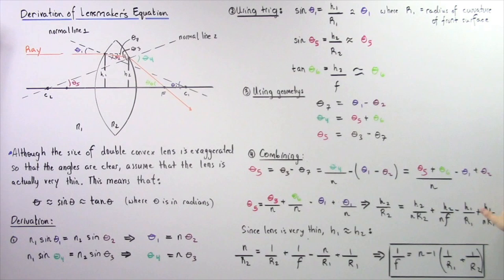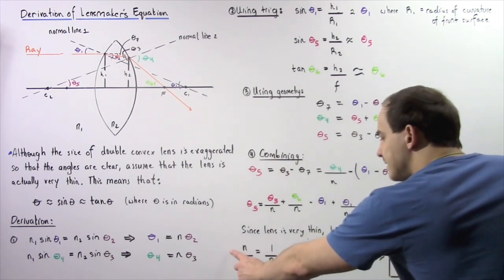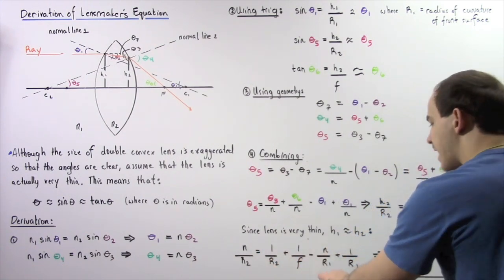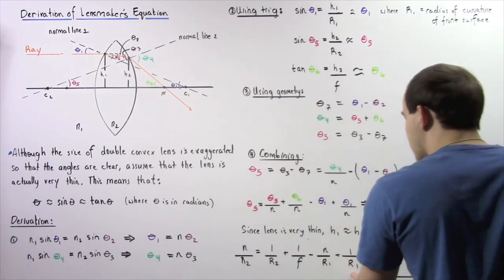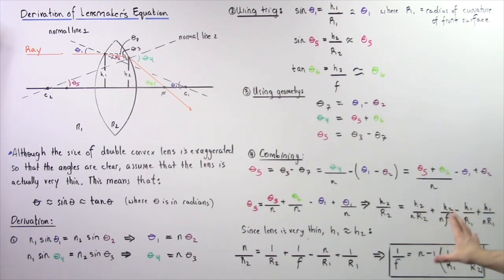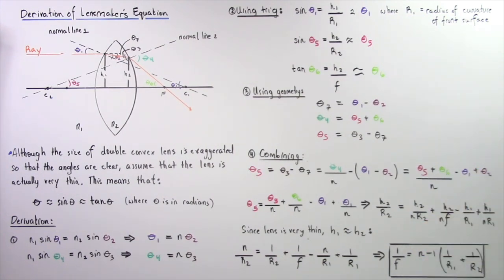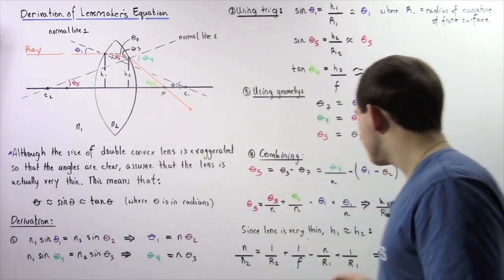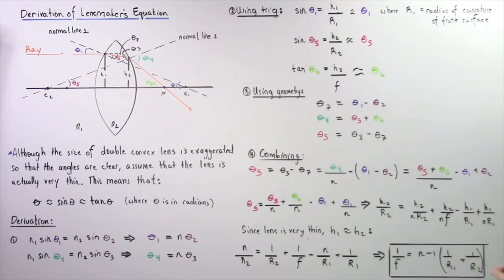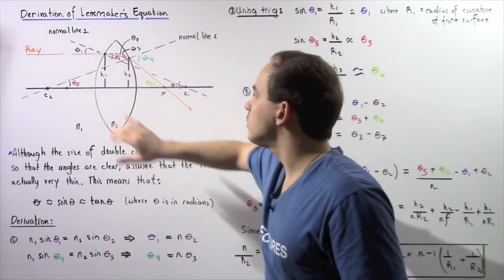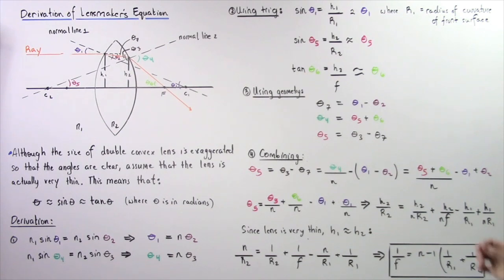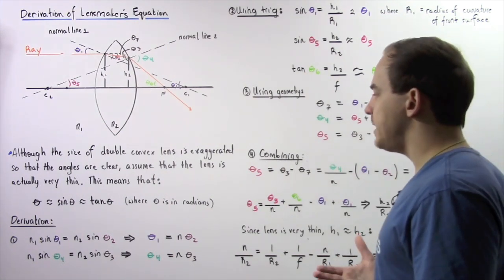Multiplying both sides by N and rearranging yields the Lensmaker's Equation: 1/F = (N − 1) · (1/R1 + 1/R2), where N is the index of refraction of the lens, F is the focal length, and R1 and R2 are the radii of curvature. R1 and R2 are positive for a convex lens surface and negative for a concave lens surface.